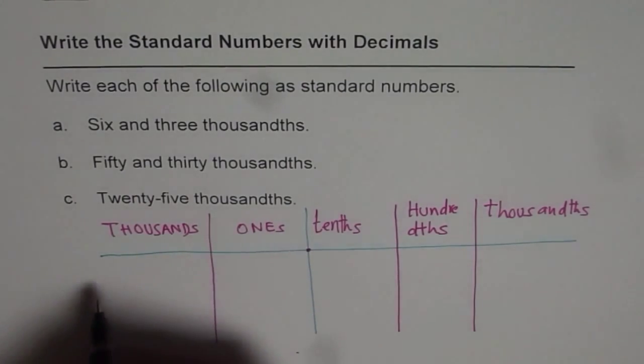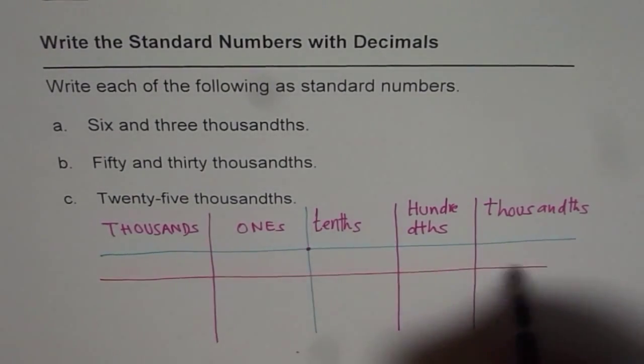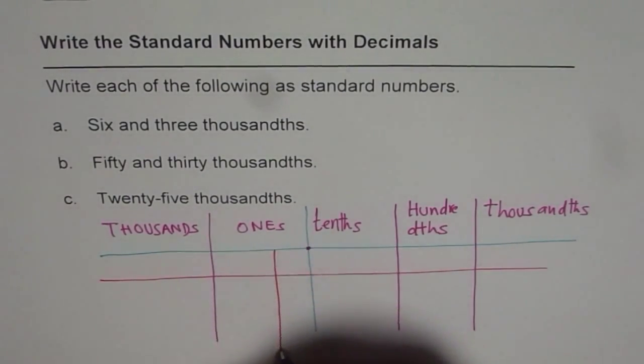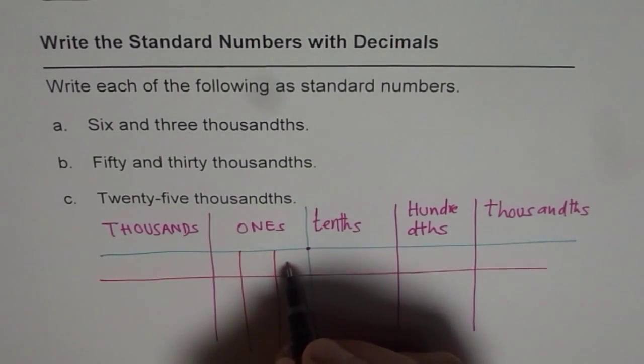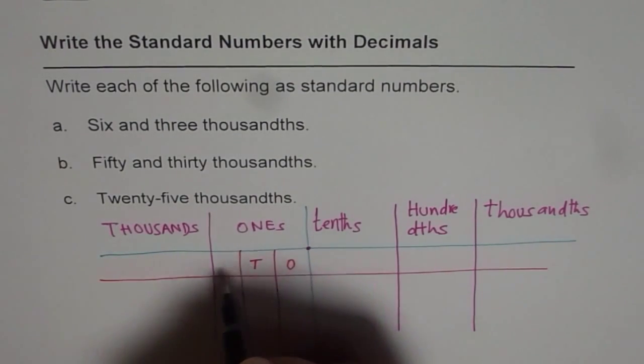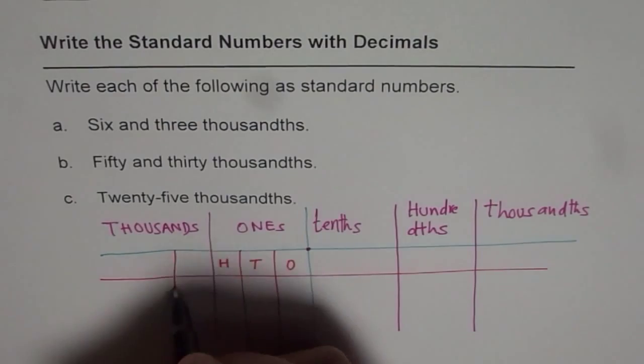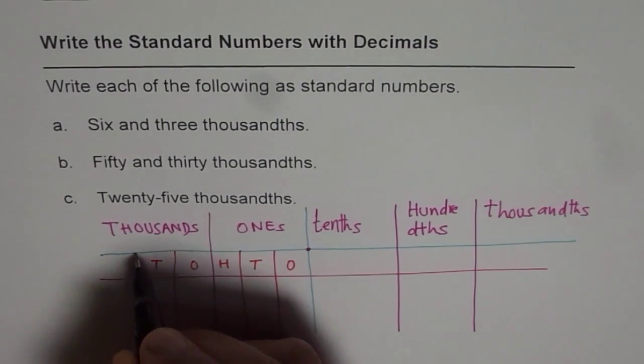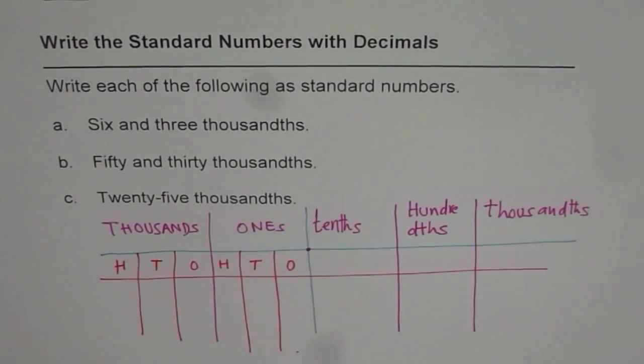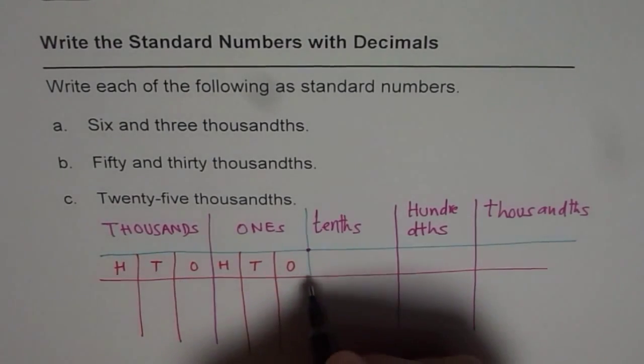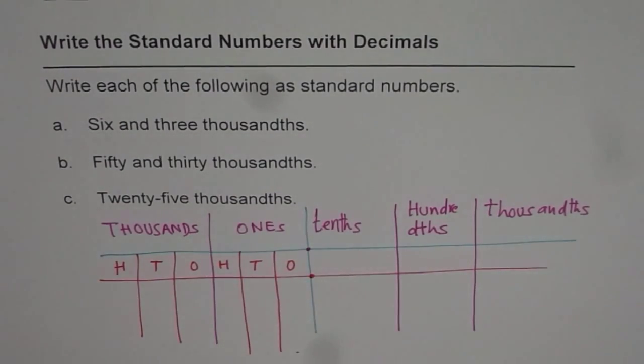Now these ones and thousands are also divided into ones, tenths, and hundredths. Ones, tenths, and hundredths. So that is how the numbers are. And here we have our decimal.